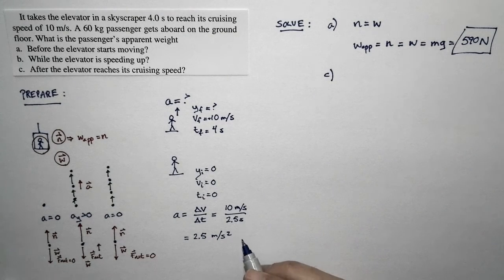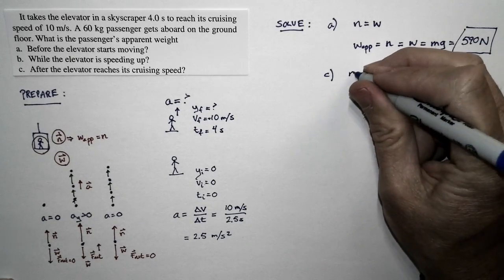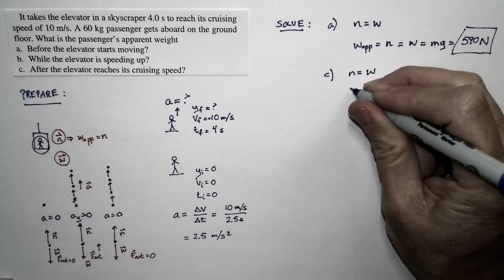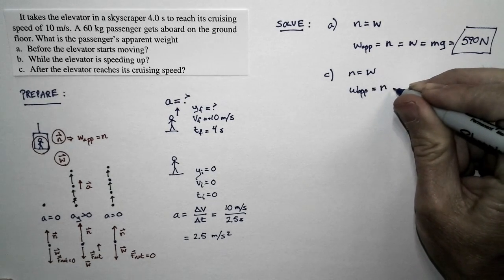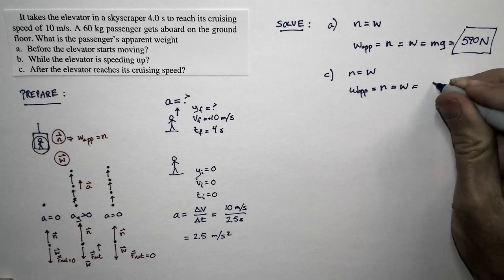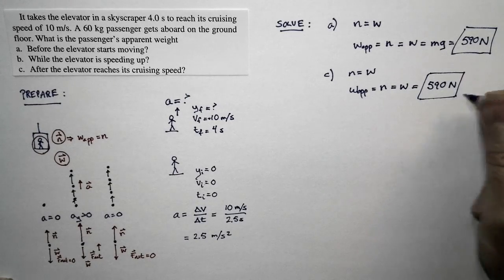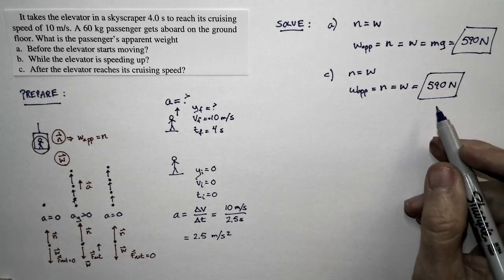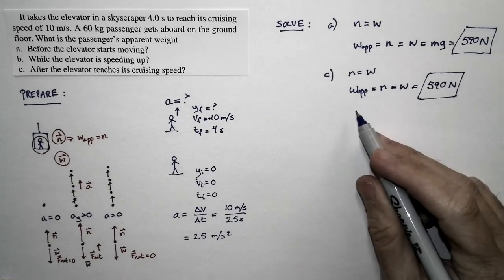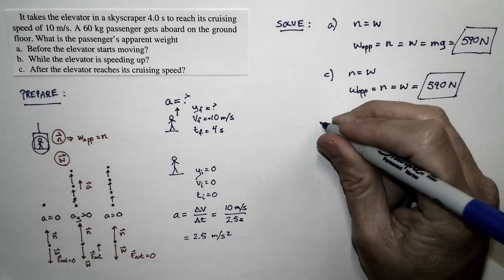For case C, we have the exact same situation: the normal force equals the weight force in magnitude, so the apparent weight is again 590 newtons. When the elevator is sitting still, the passenger's apparent weight equals the actual weight. When moving upward at constant speed, the apparent weight also equals the actual weight. These two cases have the same apparent weight.